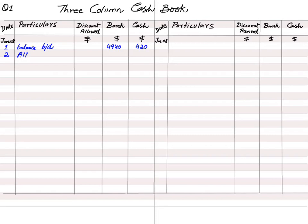The first customer is Mr. Ali, who owes us 820. Since he is paying early, we allow him a 5% discount: 820 × 5% = 41. The check received is 820 − 41 = 779. The journal entry: discount allowed account debited by 41 (it is an expense), bank account debited by 779, and Mr. Ali's account credited by 820 (reducing his debtor balance).